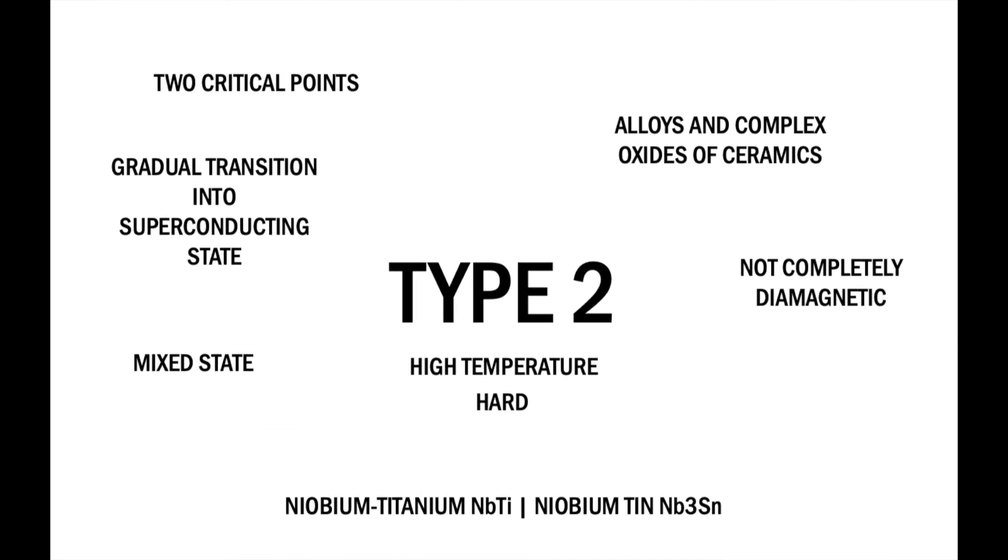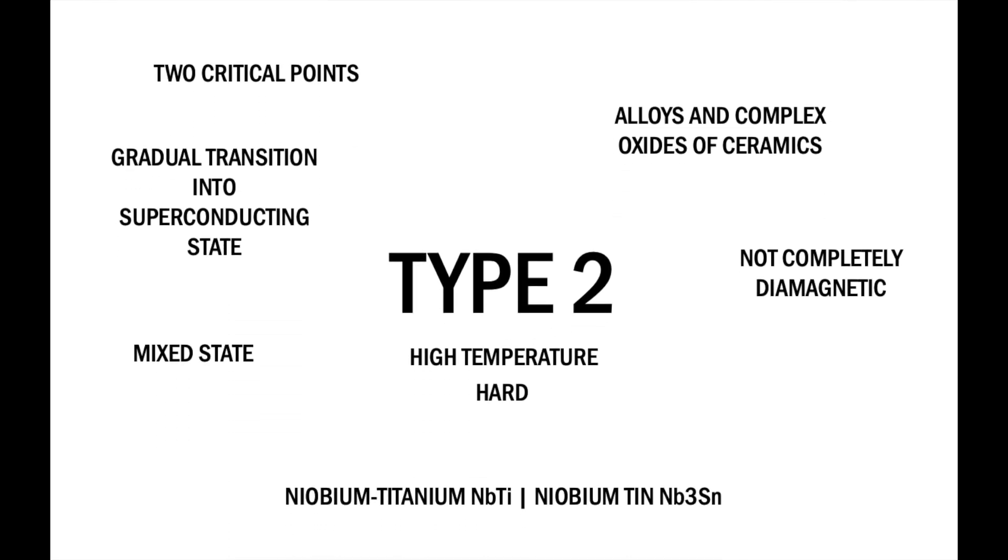Then you have your type two superconductors. These have relatively higher critical temperatures. They are generally alloys and complex oxides of ceramic. An example would be niobium titanium. One key difference is type two superconductors have a more gradual transition into their superconducting state, where they are in a mixed state.